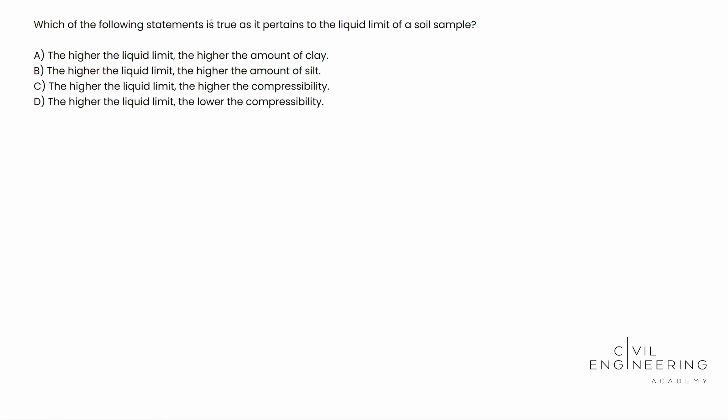We see our four options available to us. I'm going to go ahead and read them out. The higher the liquid limit, the higher the amount of clay. The higher the liquid limit, the higher the amount of silt. The higher the liquid limit, the higher the compressibility. The higher the liquid limit, the lower the compressibility.